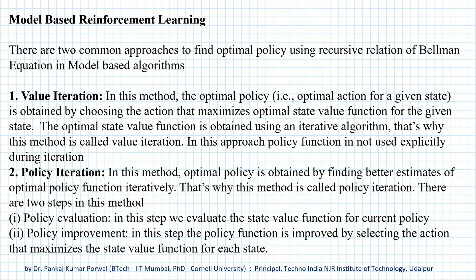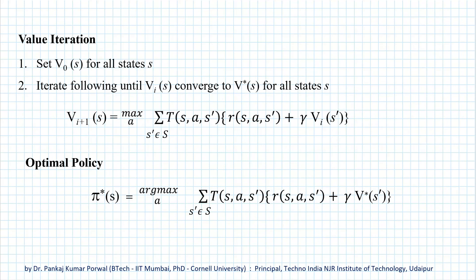In value iteration, the policy function is not used explicitly during the iteration. Rather, we update the optimal state value function by selecting the action that maximizes the estimate for the optimal state value function. The first step of the algorithm is to initialize the optimal state value function V0(s) for all the states — either as a random initialization or set to zero.